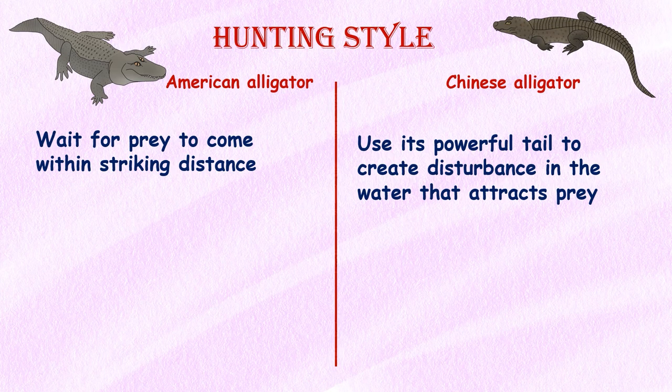Hunting style. While both species are ambush predators, the Chinese alligator is known to use its powerful tail to create a disturbance in the water that attracts prey, while the American alligator tends to wait for prey to come within striking distance.